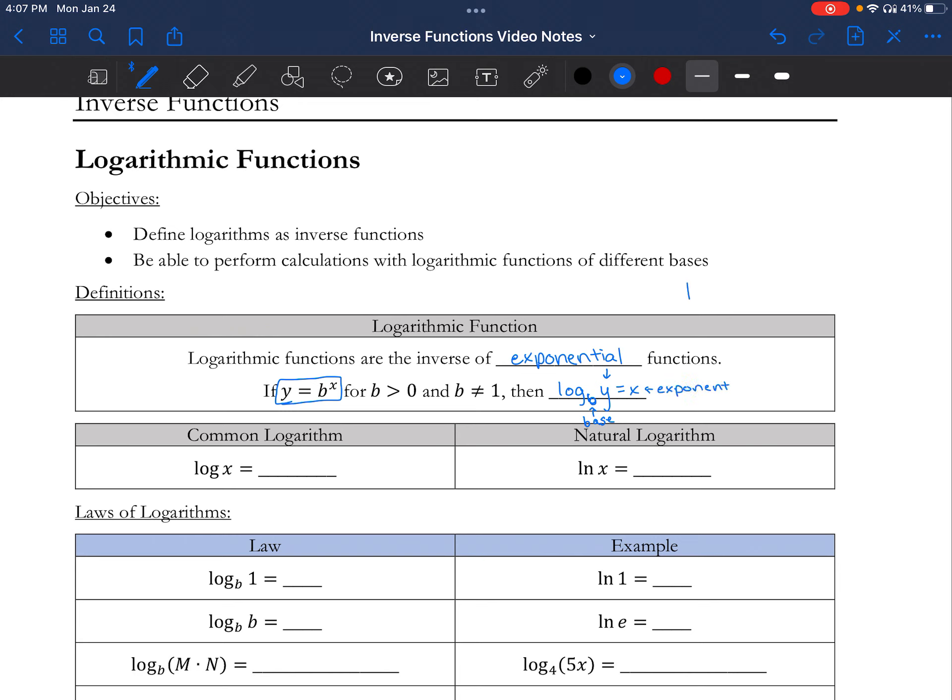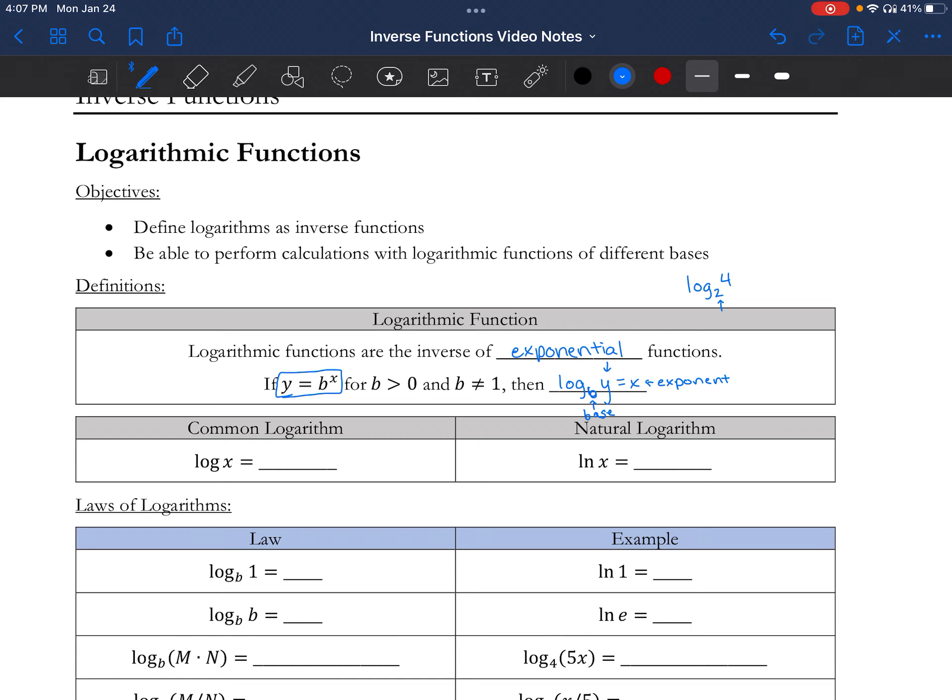For example, I could write log base 2 of 4, and it says what power do I raise 2 to get 4? And the answer is 2 squared, so the squared becomes my answer. Very similarly, I could say what if I do log base 10 of 1,000? The question becomes if I have 10, how many times do I multiply it by itself to get 1,000? And the answer is 3. 10 to the third equals 1,000.